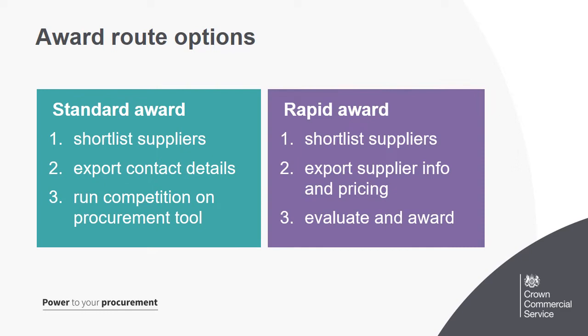With rapid award, also known as desktop evaluation, use shortlist suppliers using the DPS system, export the supplier info which includes pricing, prospectus info, social value initiatives, and answers to pre-asked quality questions. Use this to evaluate and rapid award to the winning supplier.